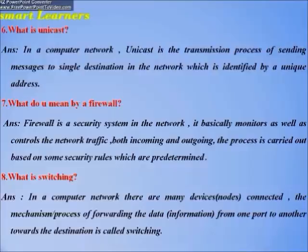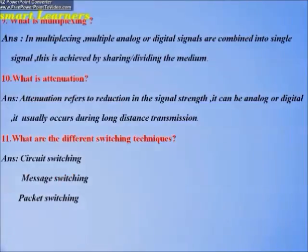What is multiplexing? In multiplexing, multiple analog or digital signals are combined into a single signal. This is achieved by sharing or dividing the medium. What is attenuation? Attenuation refers to a reduction in signal strength — it can be analog or digital and usually occurs during long-distance transmission.